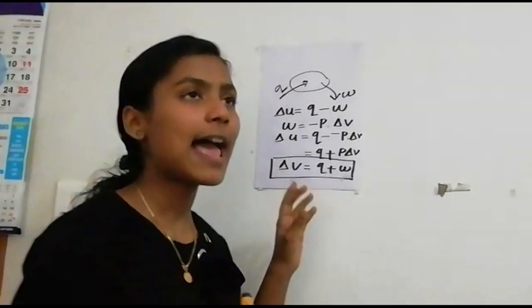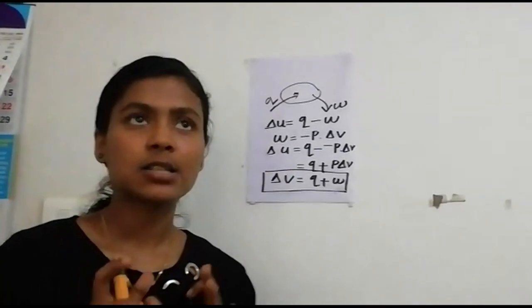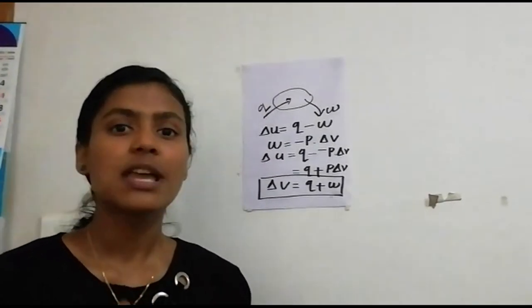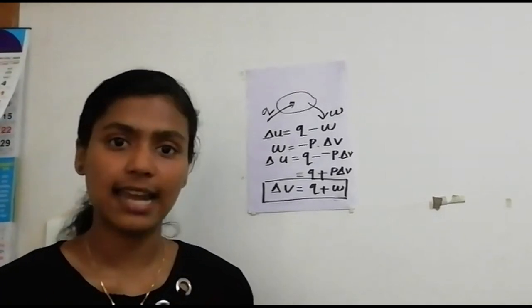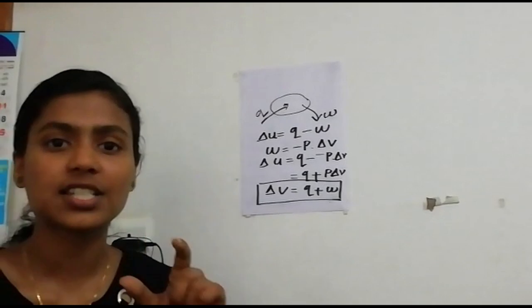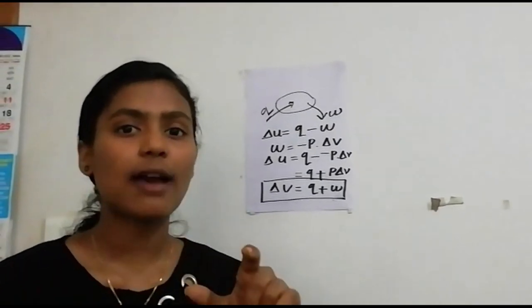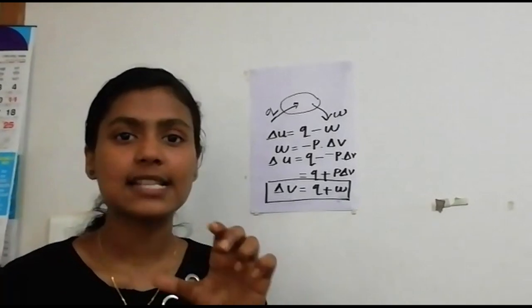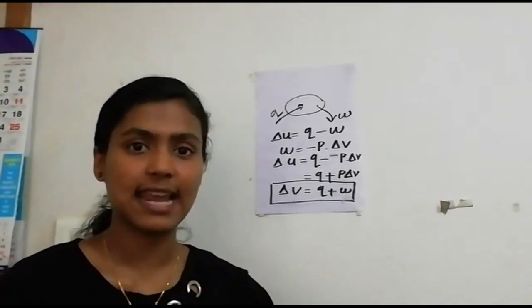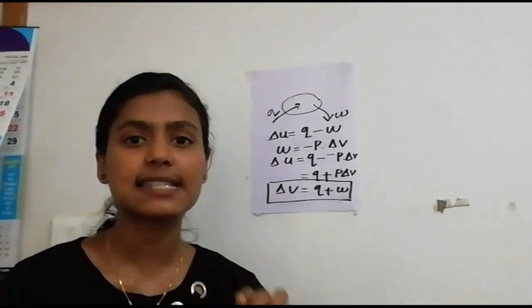When we consider an isolated system, as it is an isolated system, there will not be any internal energy change. The internal energy change of an isolated system is zero, because there is no energy transfer. In the first law of thermodynamics, the internal energy change of an isolated system is constant.